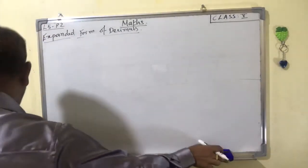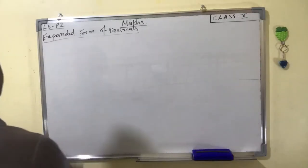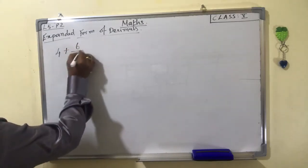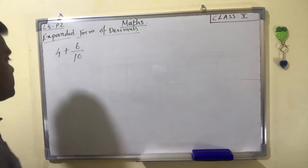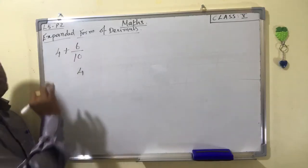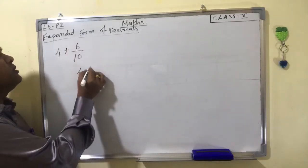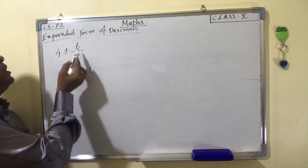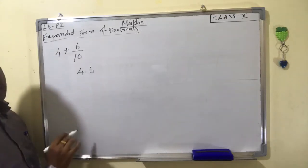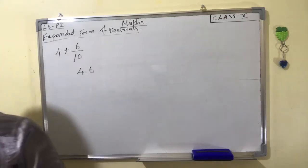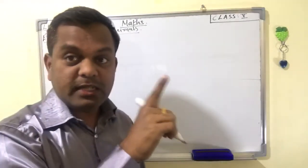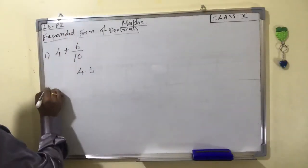Now write the decimal number for the following expansions. First: 4 plus 6/10. Very easy. 4 is the whole number. 6/10 — the tenths place is the first place after the ones place, so moving the point one decimal place gives 0.6. The answer is 4.6.